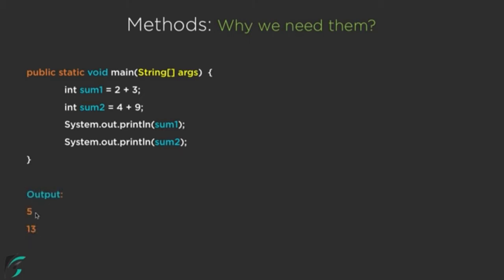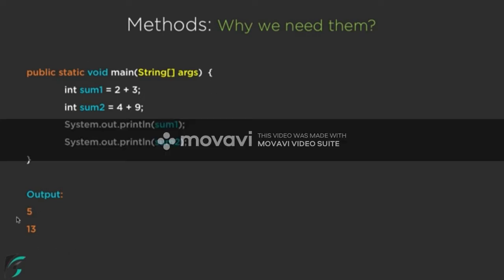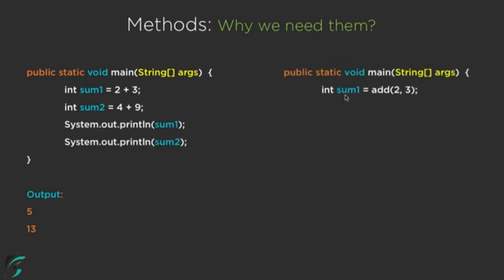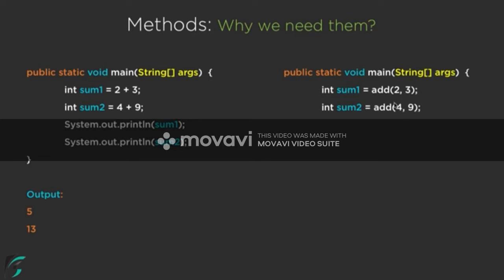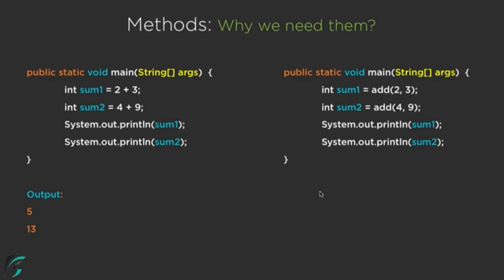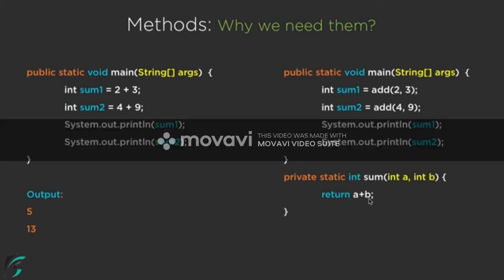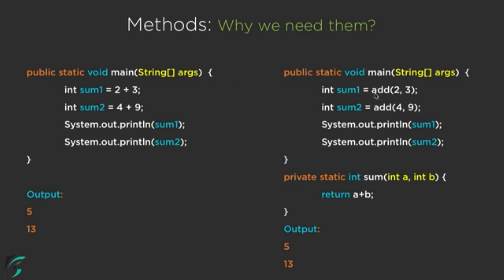The output gives 5 and 13. This is the normal way of coding in Java. On the right-hand side we have sum1 = add(2, 3) and sum2 = add(4, 9), passing values as parameters. The add method returns a + b, and we again get 5 and 13. Comparing both sides, on the left we are manually performing 2+3 and 4+9, but on the right we simply rely on the add method.